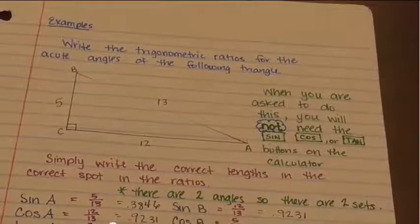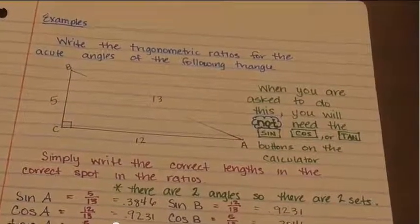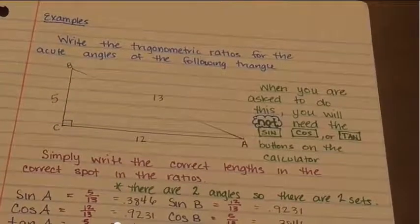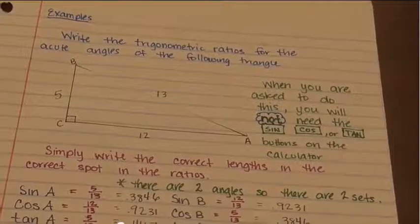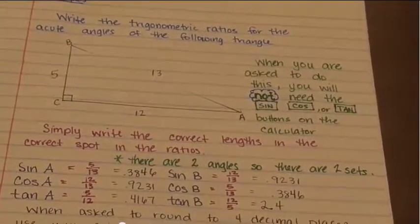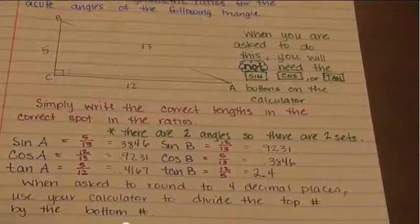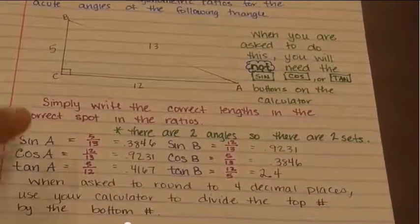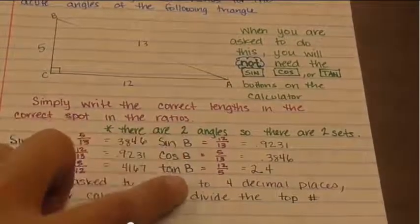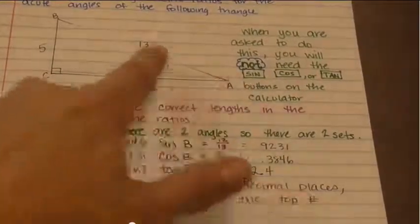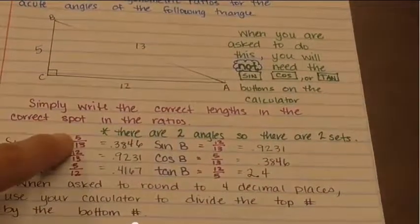You might be asked to write the trigonometric ratios for the acute angles of a given triangle. When you're asked to do this, you do not need the sine, cosine, or tangent buttons on the calculator — you just write the correct lengths in the correct spot in the ratios. There are two angles, so there will be two sets. For angle A, sine is opposite over hypotenuse, or 5 over 13.